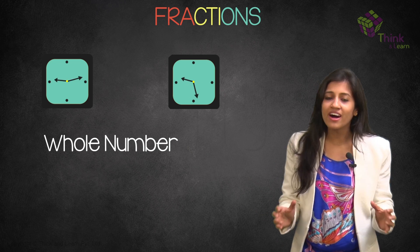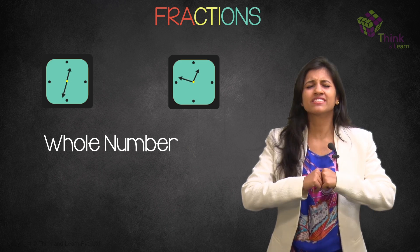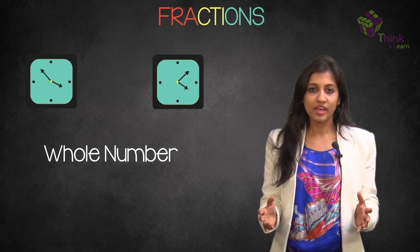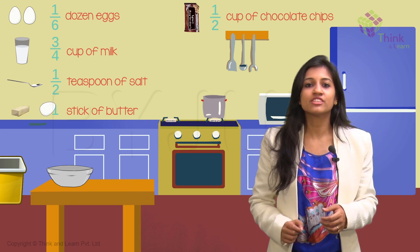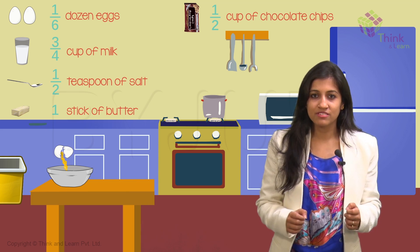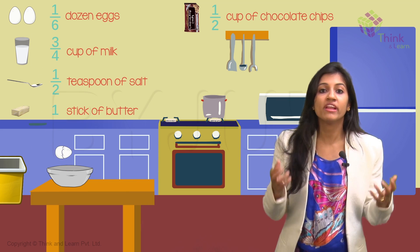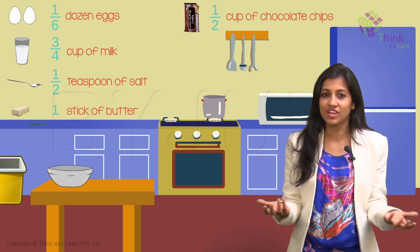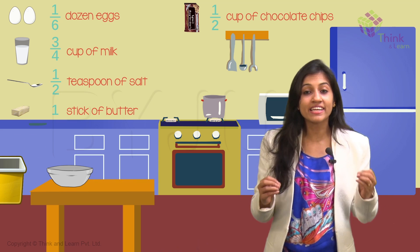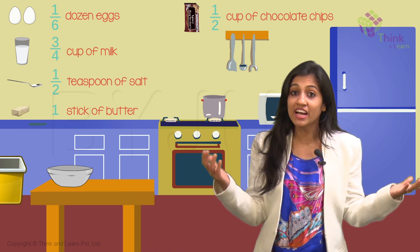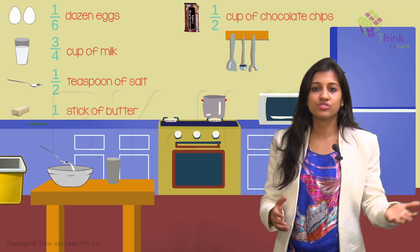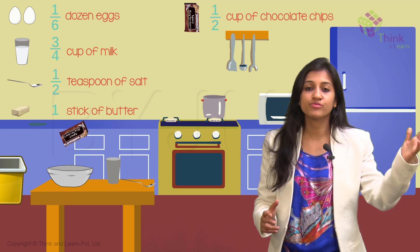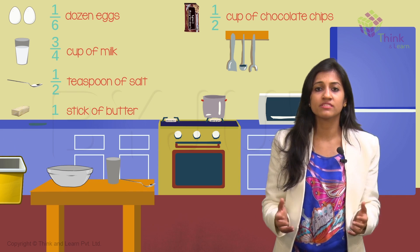The amazing part is that there are fractions everywhere. If you don't believe me, try baking a cake without using fractions. When you put two eggs into the cake mix, you're using two out of 12 eggs, which is like one sixth of a dozen. In fact, every ingredient in a cake recipe is a fraction of something: three-fourth cup of milk, half teaspoon of salt, a stick of butter, half a cup of chocolate chips — so many things.